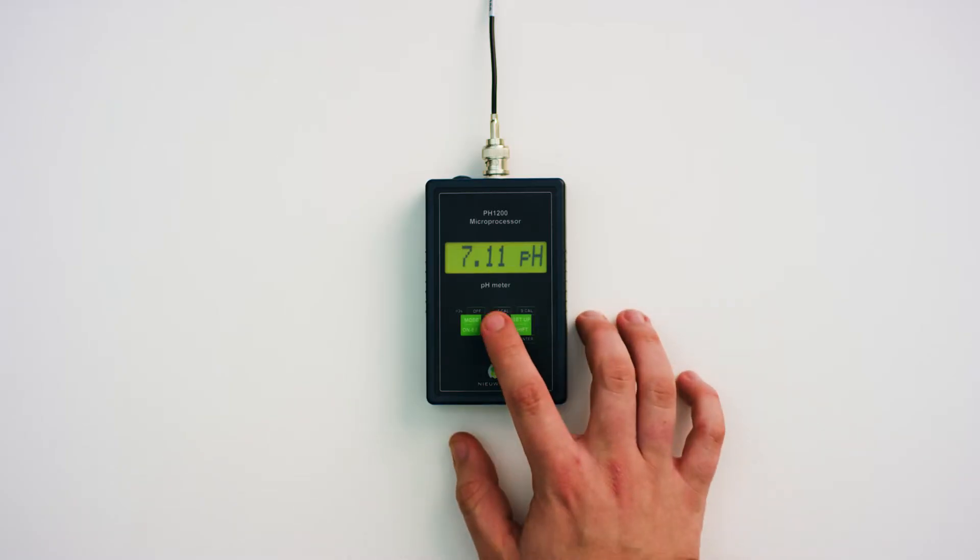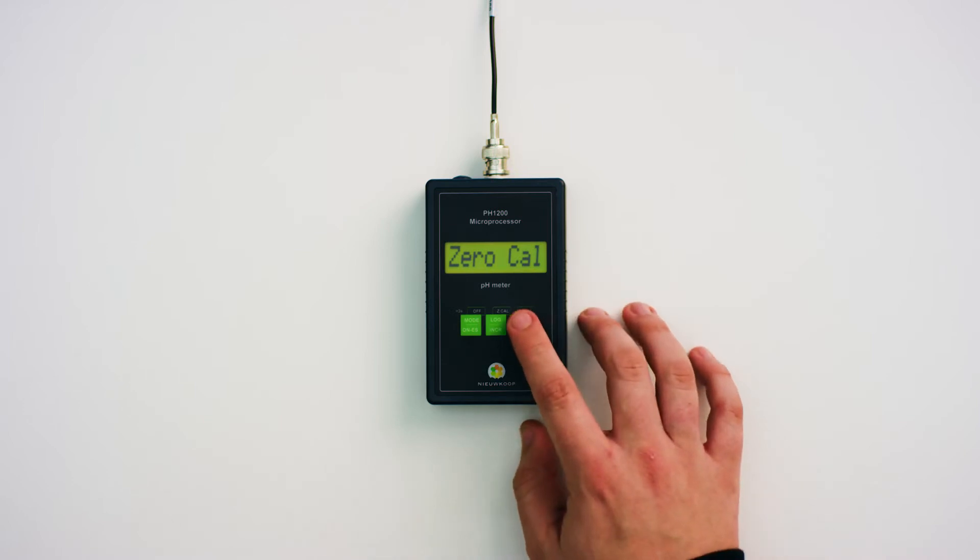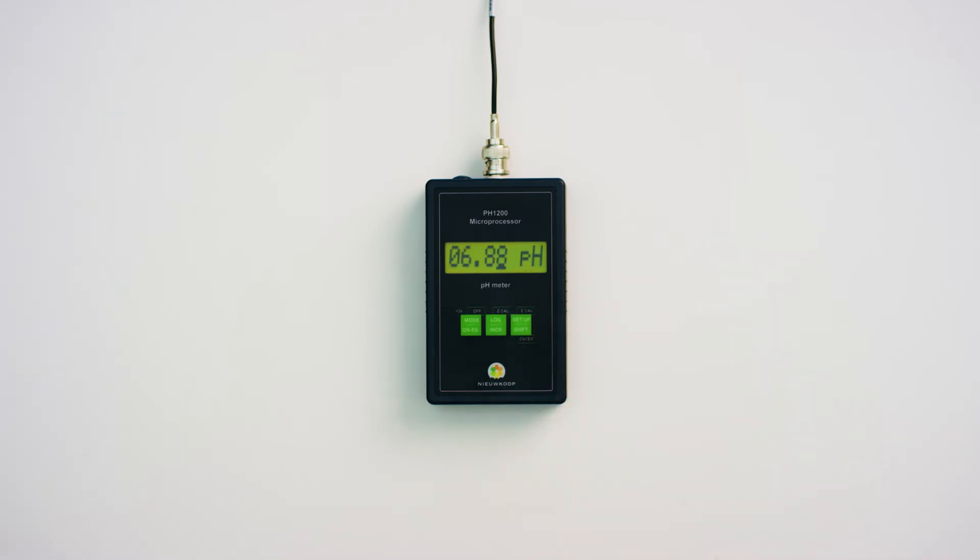Press and hold the log button until 0 cal appears. This is followed by a pH value. When it is stable briefly press the setup button. 6.88 will now appear in the display.